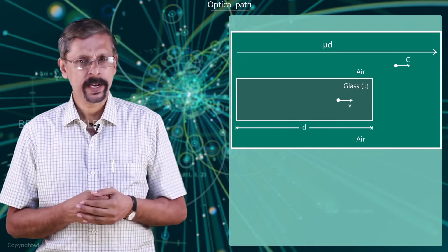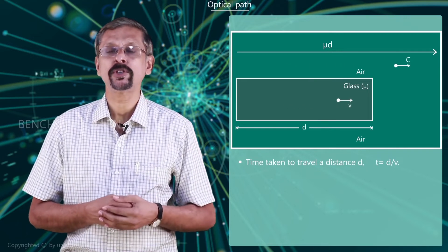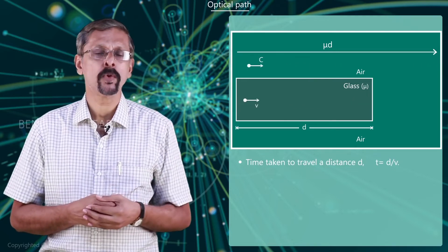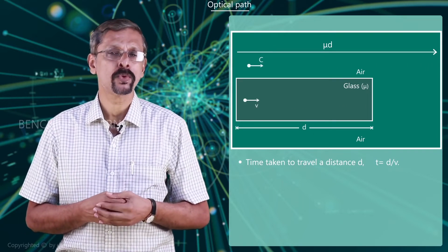Now you can look at the figure. The time taken by light to travel a distance d, that is t, equals d by v, where v is the velocity of light travelling through this material.